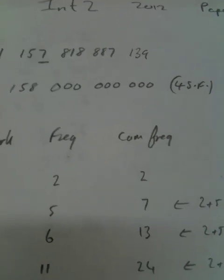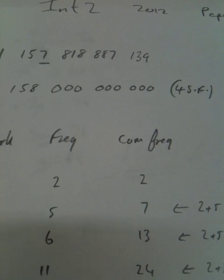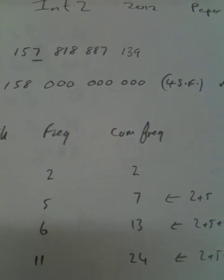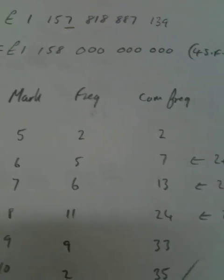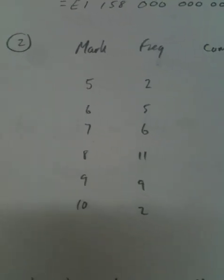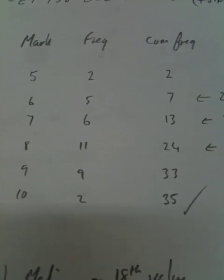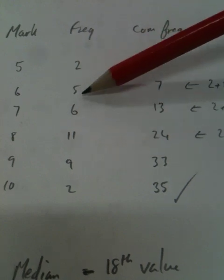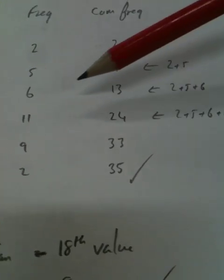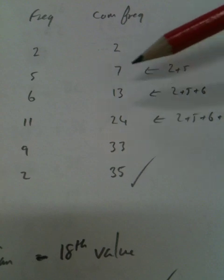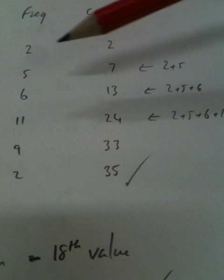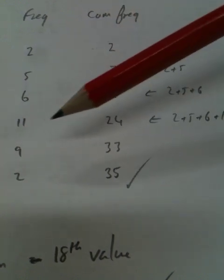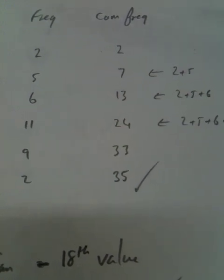Question 2. A teacher recorded the marks out of 10 of a group of pupils for a spelling test. Part A: Copy the table and add a cumulative frequency column. So there's the table it's given. Cumulative frequency basically means add up the frequencies as you go along. So we've got 2, and we've got 5, 2 add 5 is 7. And here's the 6.